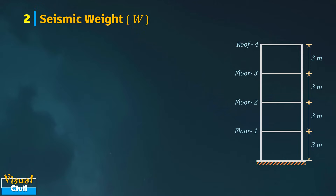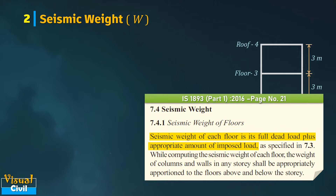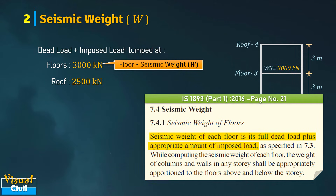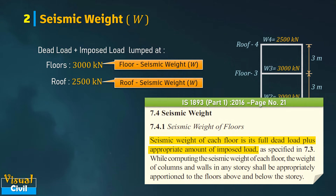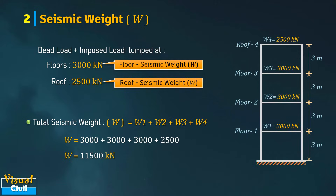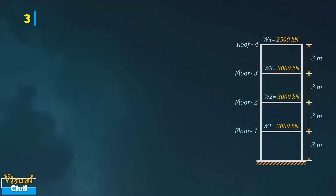In the second step, let us compute the seismic weight W. As per clause 7.4.1, the seismic weight of each floor is its full dead load plus the appropriate amount of imposed load. Here, the total dead load plus imposed load lumped at floors and roof is already given — 3000 kilo-newton and 2500 kilo-newton will be directly used as seismic weight of floors and roof respectively. After summation, the total seismic weight is 11,500 kilo-newton.